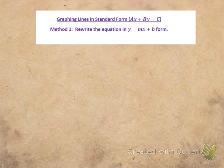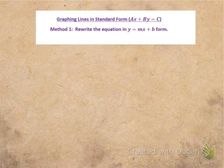In this video, we are going to look at how we graph a line that is in standard form. When we say standard form, we mean ax plus by equals c. So up until this point, we've only graphed lines that have been in slope-intercept form, which is y equals mx plus b.